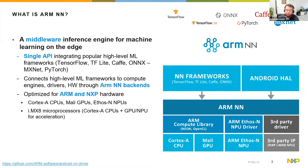The benefits of using ArmNN compared to other frameworks would be mainly that it is optimized for Cortex-A CPUs through the ARM Compute Library. It is also optimized for Mali GPUs, again through the ARM Compute Library but through the OpenCL interface, so you can even use it on other devices. The only requirement is OpenCL 1.1 and a few extensions.